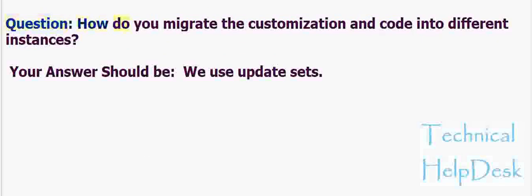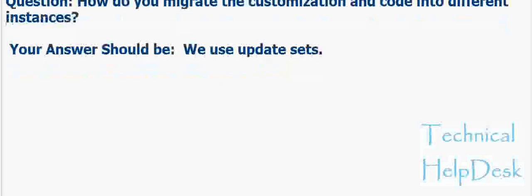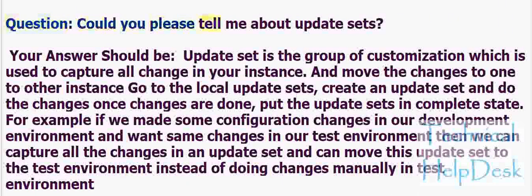Question: How do you migrate customizations and code into different instances? Your answer should be: we use update sets. An update set is a group of customizations used to capture all changes in your instance and move them from one instance to another. Go to local update sets, create an update set, make your changes, and once done, put the update set in complete state.